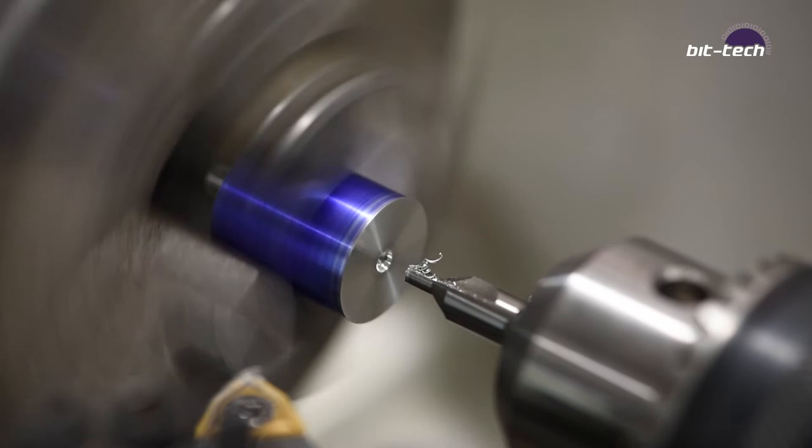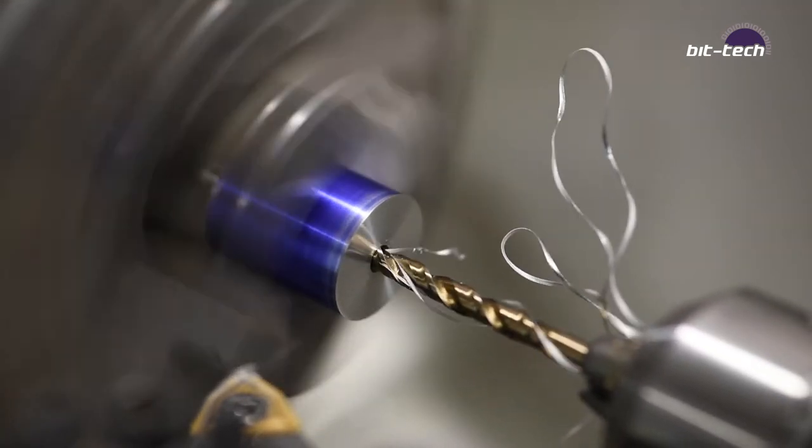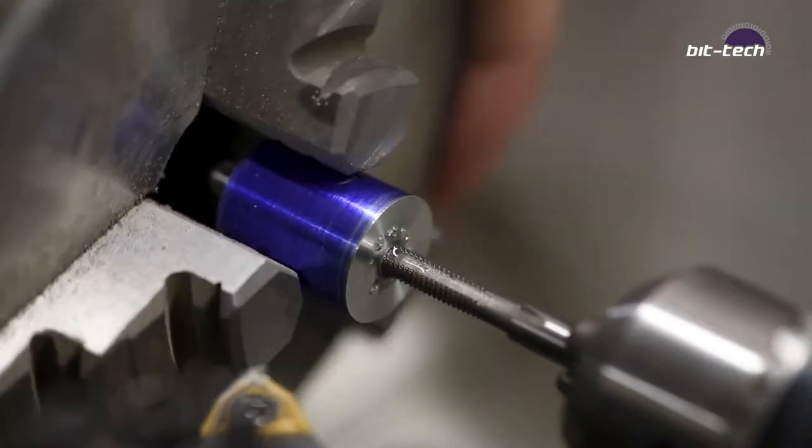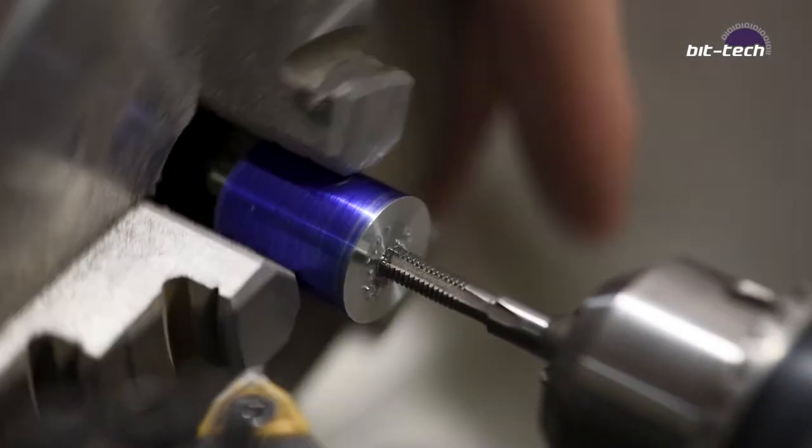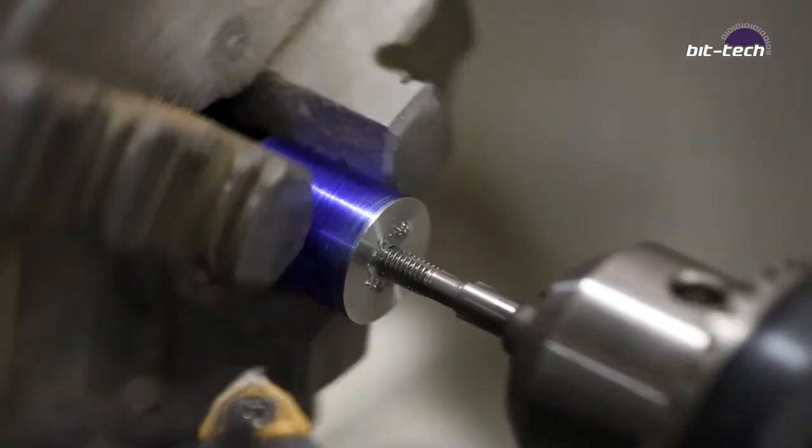To cut the internal threads I put a 4 millimeter tap into the tailstock chuck and rotated the main lathe chuck by hand. I made sure to use plenty of cutting fluid for this and doing it by hand allows you to have a good feel for whether or not there's too much strain being put on the tap itself.